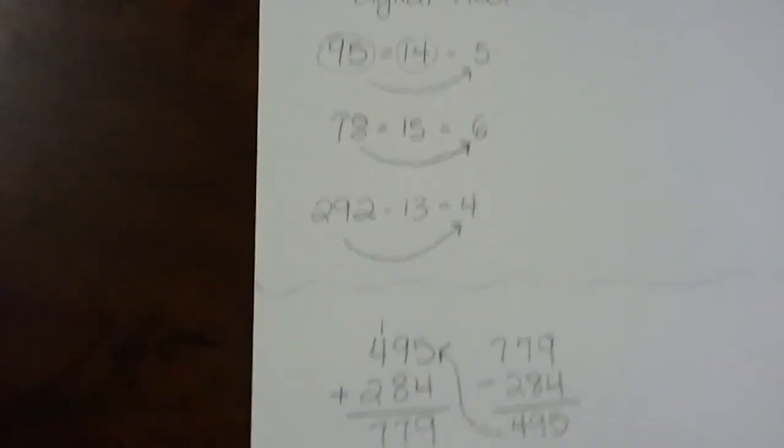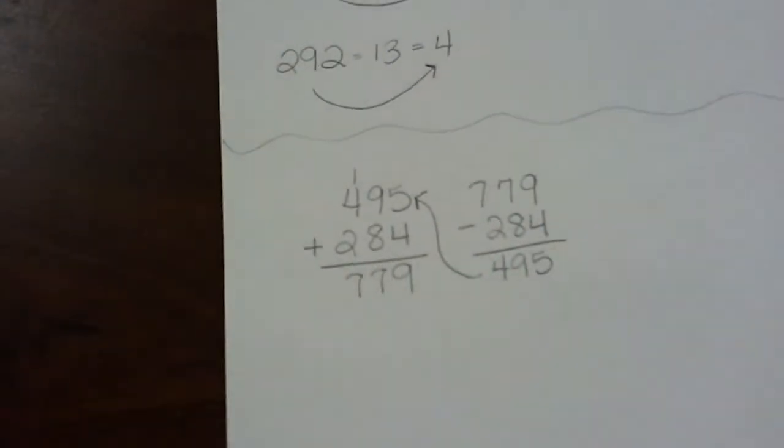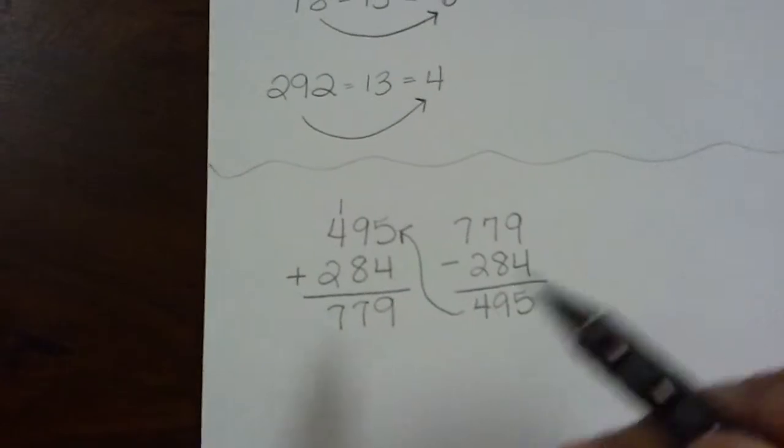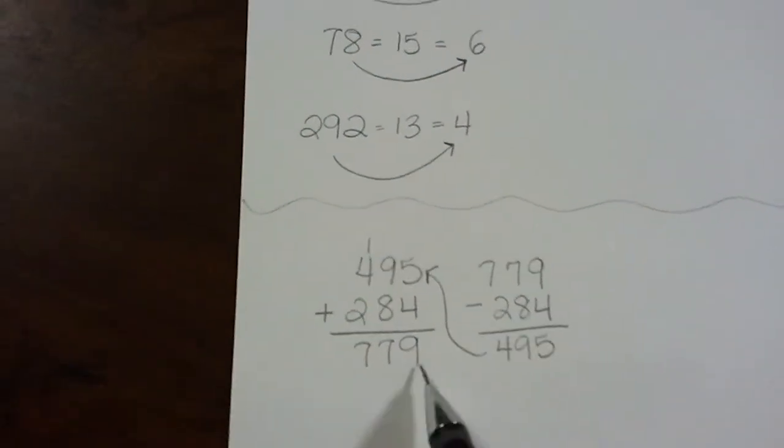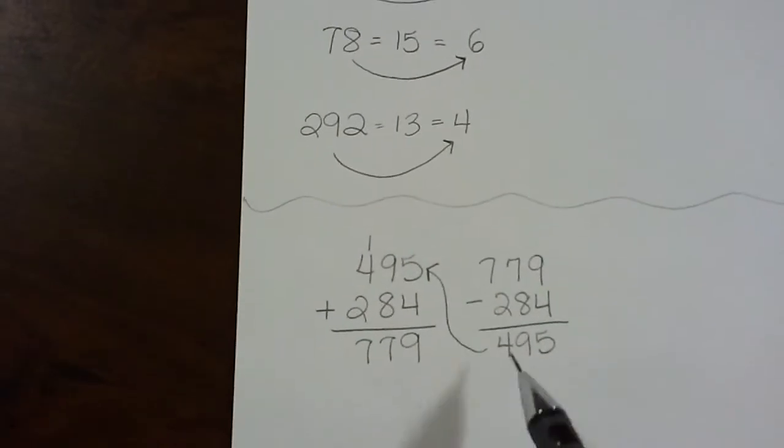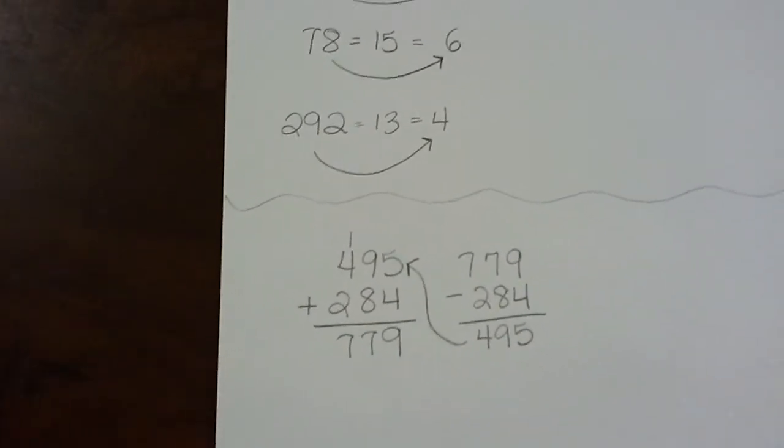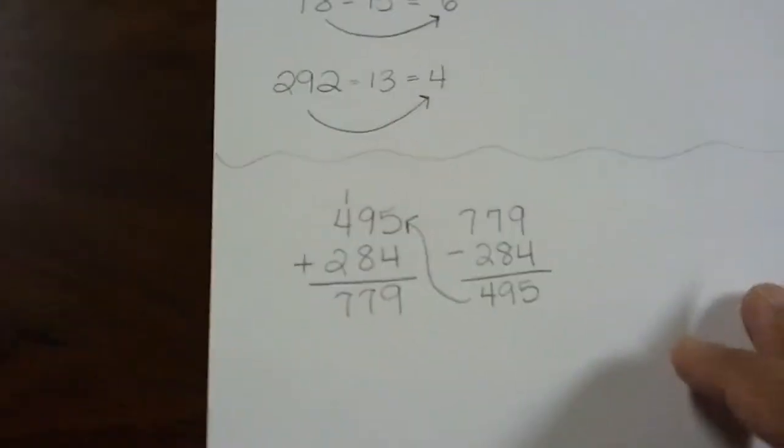So you know what digital root is. Now let's use this information to check an addition problem. I have 495 plus 284. I got 779. And normally we would use subtraction to check it. But let me show you how to use digital root.